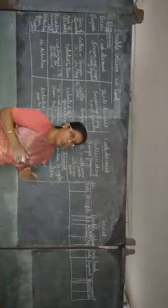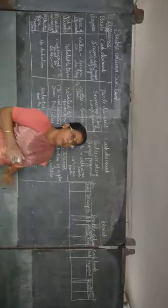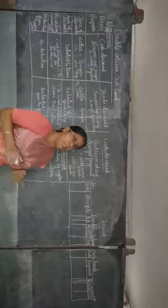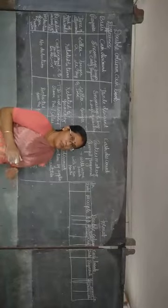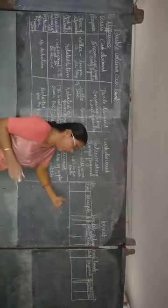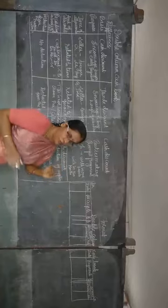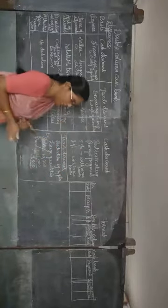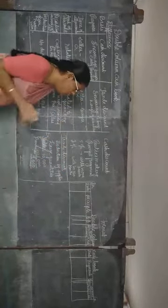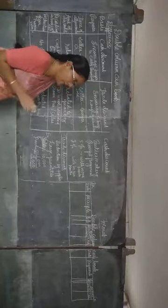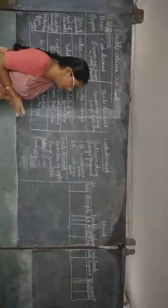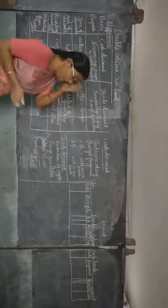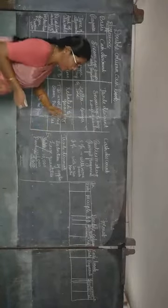As far as discount allowed is the expense for the seller, debit all expenses and losses. As per the nominal rule, we are debiting the discount allowed. Now let us move on to — what is the cash discount? What is the credit discount? Already we have discussed about trade discount. Now let us go deeper into the concept.